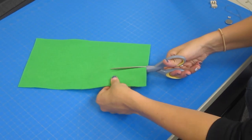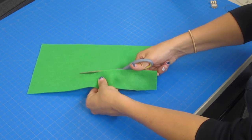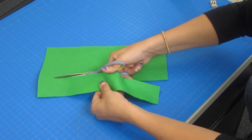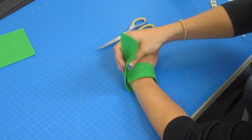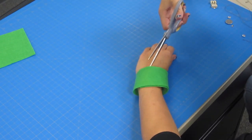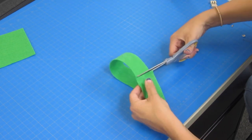First we will cut a strip out of the felt about two inches wide. We will then measure it around your wrist and have a little overlap of an inch.